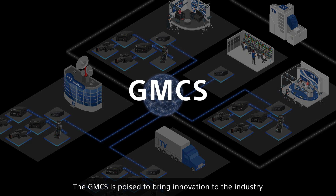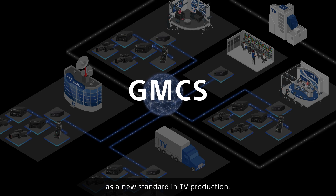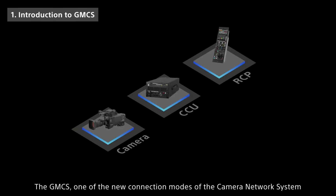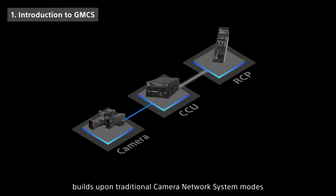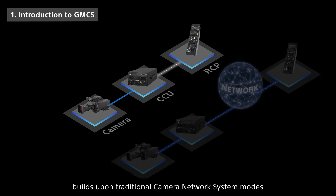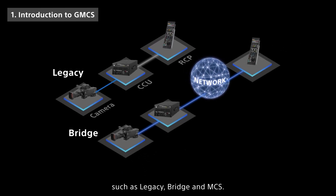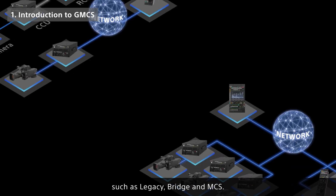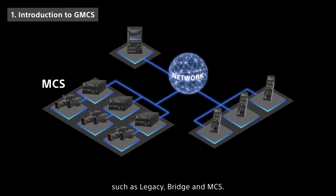The GMC-S is poised to bring innovation to the industry as a new standard in TV production. As one of the new connection modes of the camera network system, it builds upon traditional camera network system modes such as legacy, bridge, and MCS.